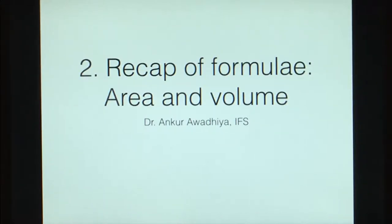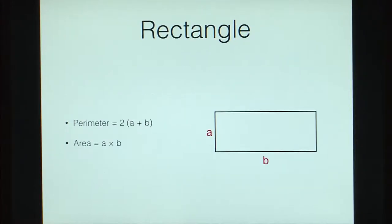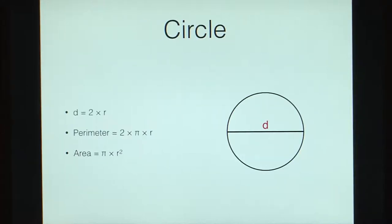In the second class, we looked at a recap of formulae for area and volume. For a triangle, the perimeter is the sum of the sides and the area is half of base times height. For an equilateral triangle, the perimeter is 3A and the area is (√3/4)A². For a rectangle, the perimeter is 2(A+B) and the area is A×B. For a circle, the diameter is twice the radius, the perimeter is 2πr, and the area is πr².